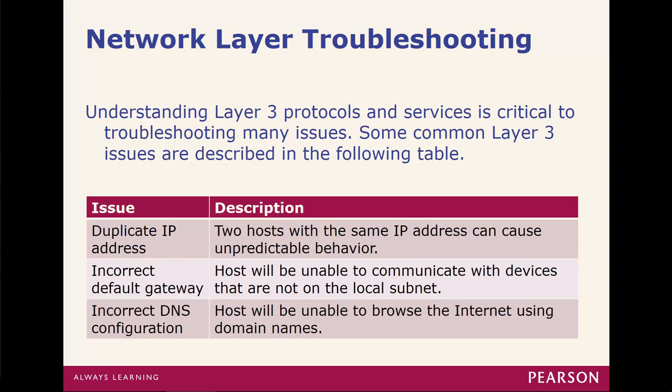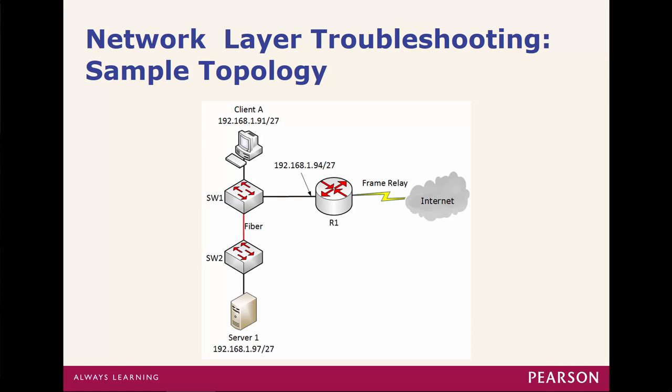Common areas could include incorrect information: incorrect IPs, incorrect gateways, incorrect DNS, or maybe even duplicate addresses — those are all possible scenarios. Examples include verifying that you have the appropriate gateway configured, the appropriate network configured, and whether the addresses are on the same network. For example, are 91, 97, and 94 all part of the same address range?